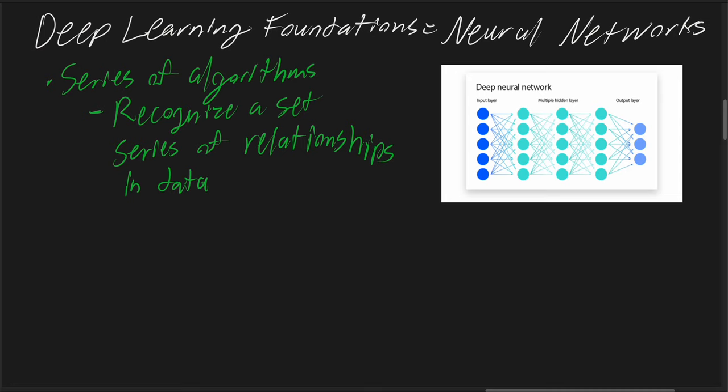This is why neural networks have found immense application in fields ranging from speech recognition and image processing to drug discovery and autonomous vehicles.